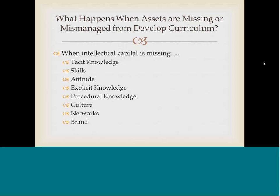Perhaps there's a lot of redundancy, overlap, or gaps. So while the tacit knowledge of each individual faculty member might be fully used, the fact that the procedural knowledge is poorly managed leads to a diminished value of the overall tacit knowledge — and perhaps also of the explicit knowledge, because the actual course design and course development is substandard. So again, we have a diminished value due to the mismanagement of one of those intellectual capital assets.